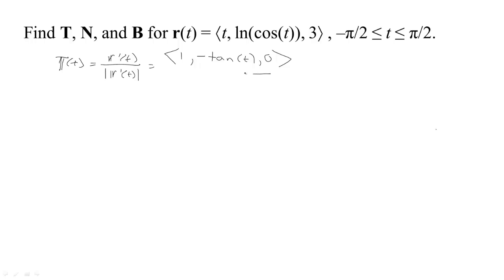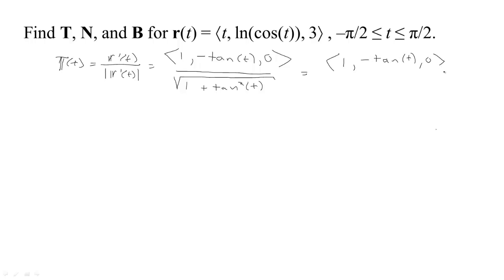We'll take that and divide it by its length, which is going to be the square root of 1 squared plus tangent squared. That gives us the vector (1, negative tan t, 0) divided by the square root of 1 plus tangent squared, which equals secant squared, so we have the square root of secant squared.